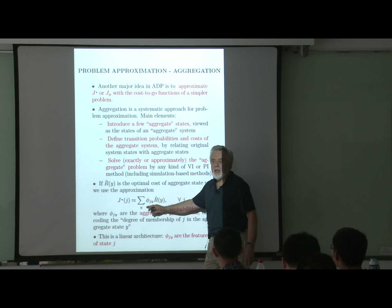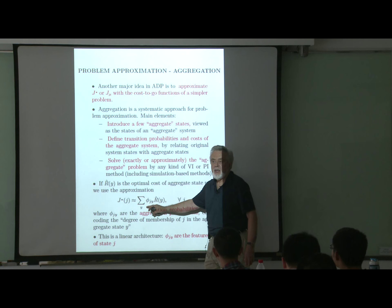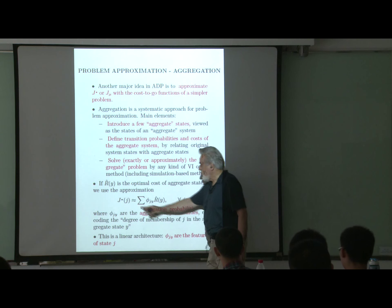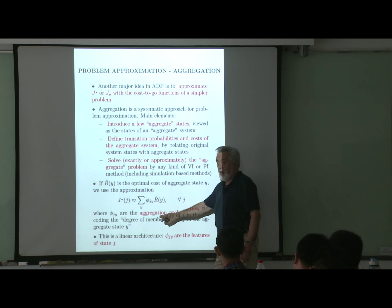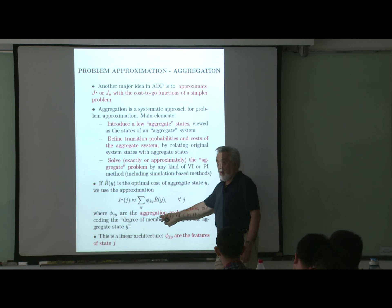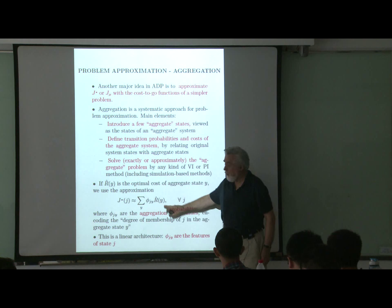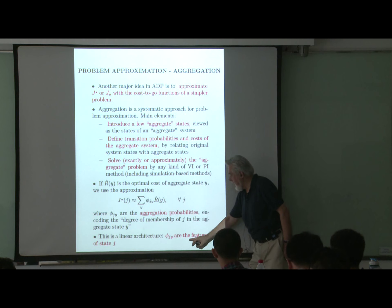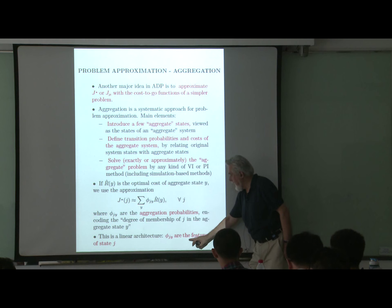Notice that you can also view these phi terms as features. Basically, this is of the form phi times R — capital phi, capital R — so there's a matrix phi of the aggregation probabilities weighted by a vector of r-hats, a smaller-dimensional version. So this is a linear architecture, with the phi_jy being the features of state j — one feature for aggregate state 1, one for aggregate state 2, and so on. At a higher level, we're not doing anything different. It is again a linear feature-based architecture, but the training method is different because now we're looking at a simplified problem to get these coefficients.